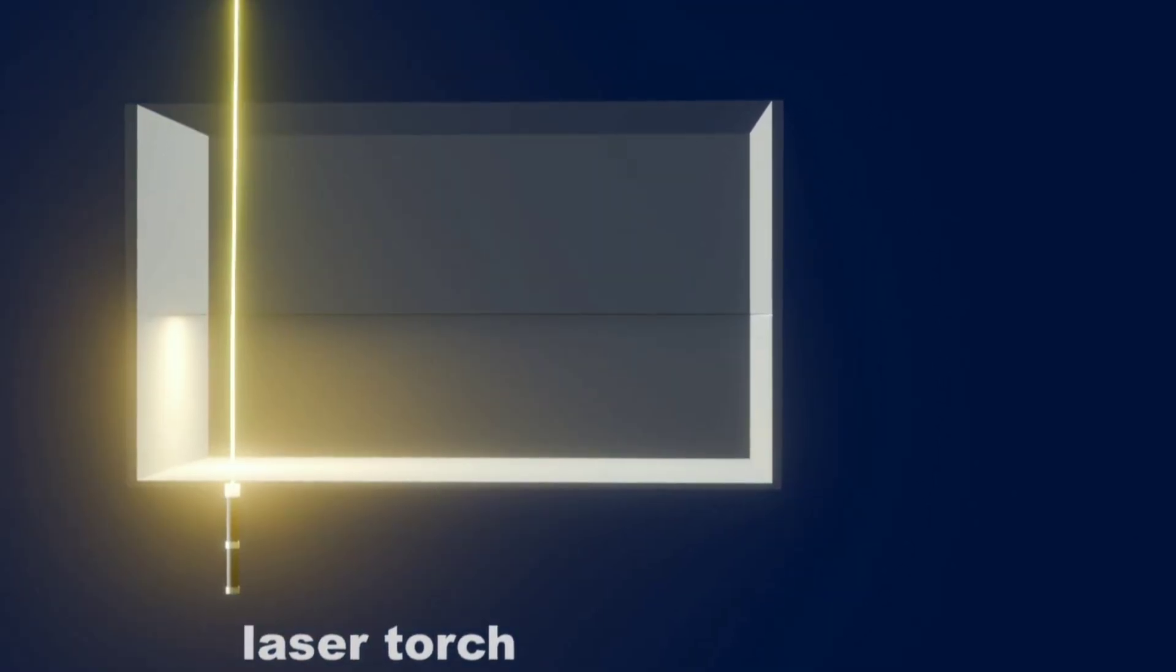When the light emits from the torch, we see that light goes straight in the water and emerges into air without deviation. Now if we slightly rotate the laser torch,